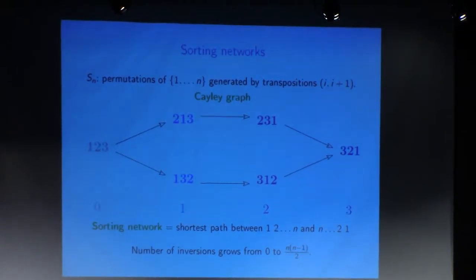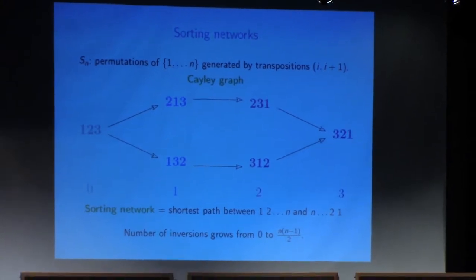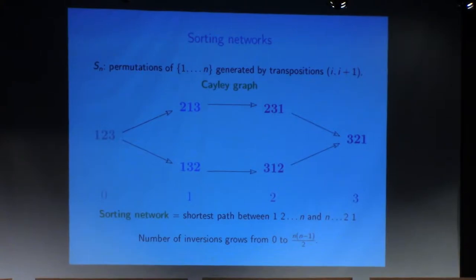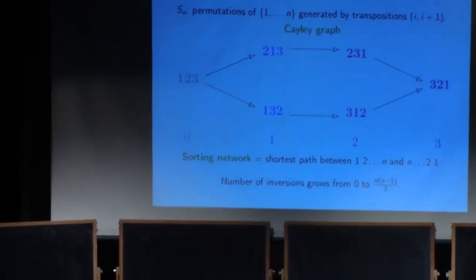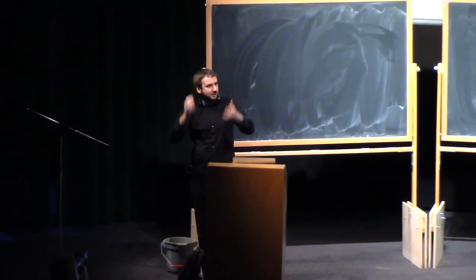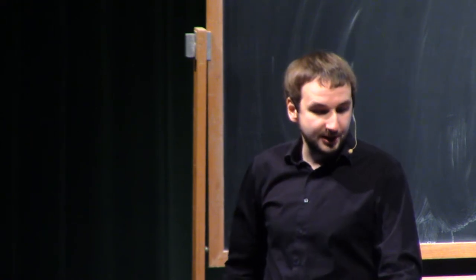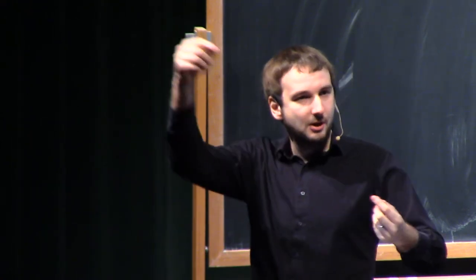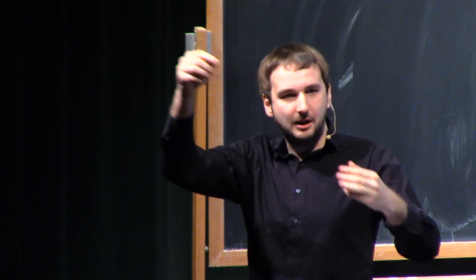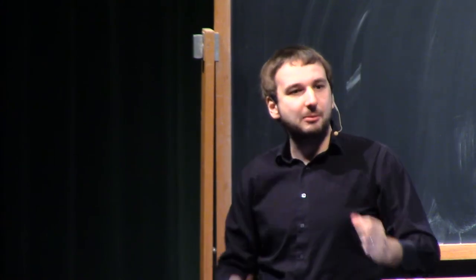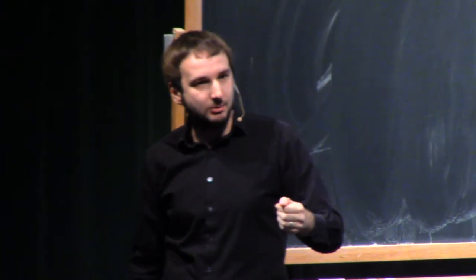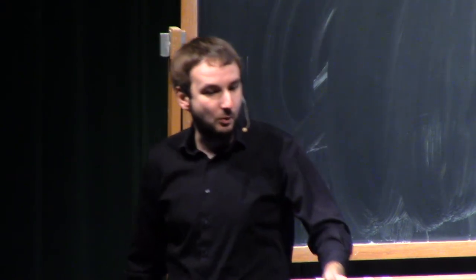What does 'shortest path' mean? When you interchange two letters in a permutation, there are two options. Maybe they were in increasing order and became decreasing, so you increase the number of inversions. Or maybe they were in decreasing order and after the swap they become increasing, so you decrease the number of inversions. On a shortest path, you should always only increase the number of inversions, meaning the count grows from zero up to n choose 2, which is n times n minus 1 over 2, increasing one by one.